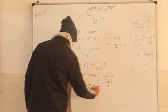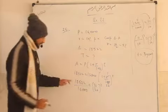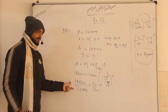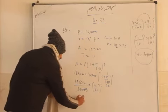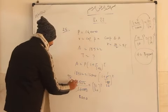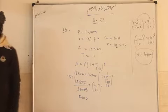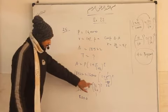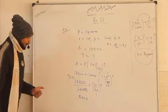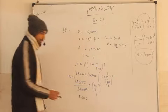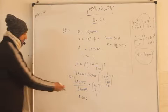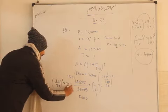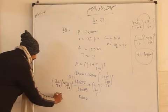So 18,522 over 16,000 equals (21/20)^T. We reduce this fraction to its lowest form. Dividing through, we find the ratio simplifies to (21/20)^3. Since the bases are the same — 21/20 on both sides — the powers must match. Therefore T equals 3.